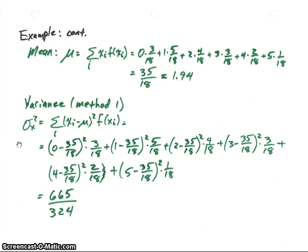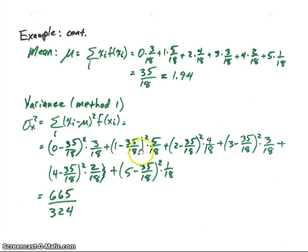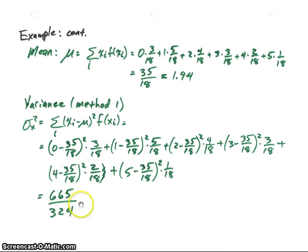Now let's do the variance both ways to see the difference. The first method: variance is the sum of x sub i minus mu, squared, times the distribution value. So for x equals zero: zero minus thirty-five eighteenths, squared, times three-eighteenths. Then one minus thirty-five eighteenths, squared, times five-eighteenths. Continuing through all values — two minus thirty-five eighteenths squared times its value and so on — and summing all those up, we get 665 over 324.